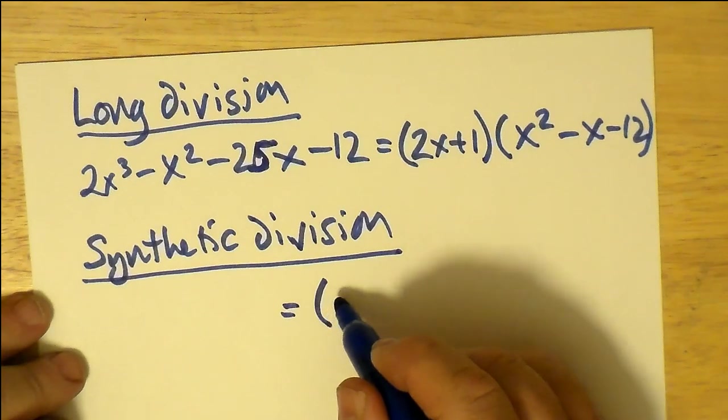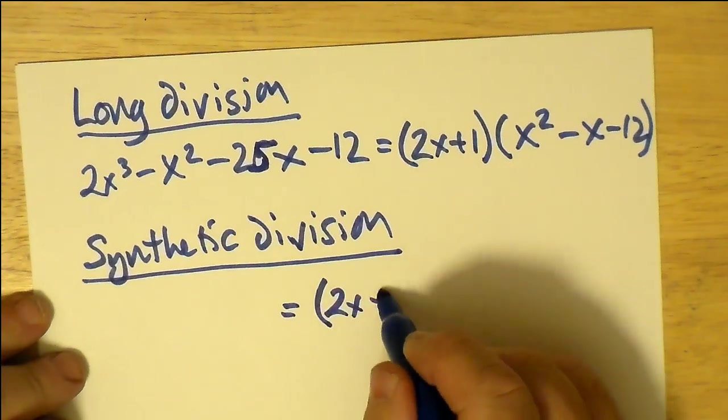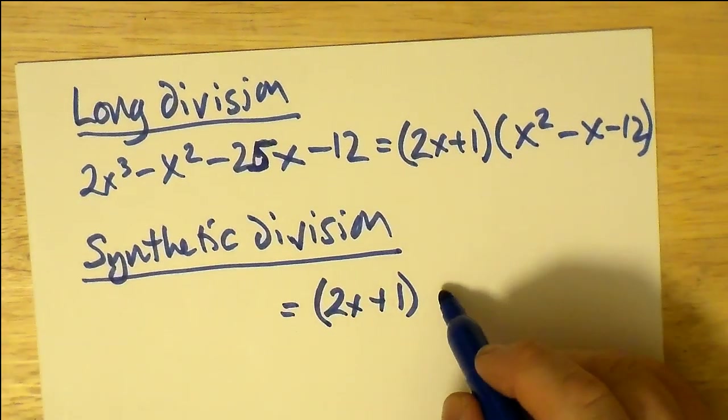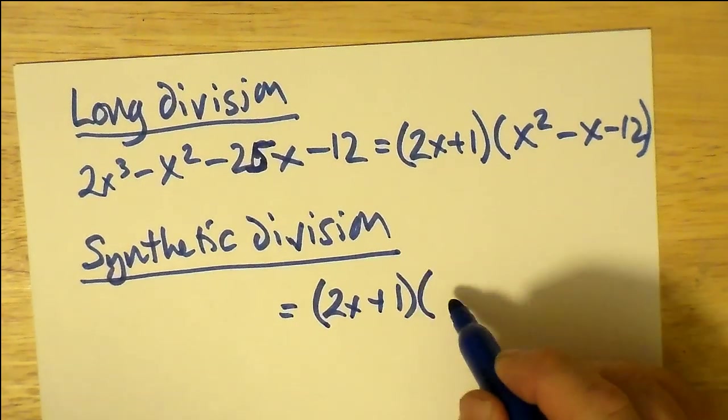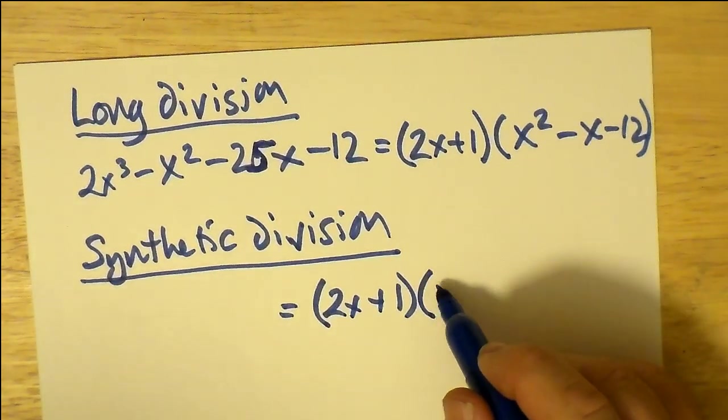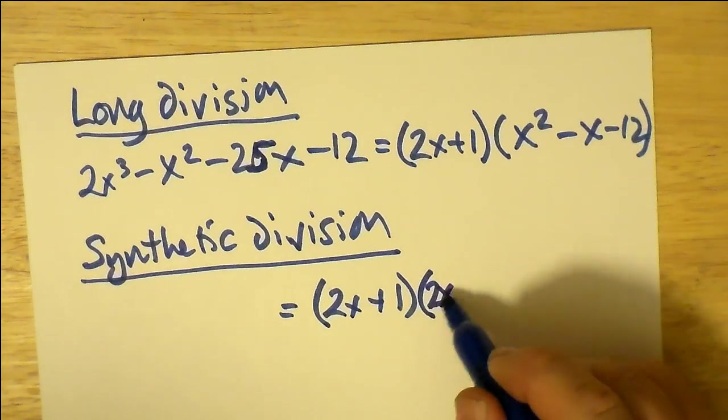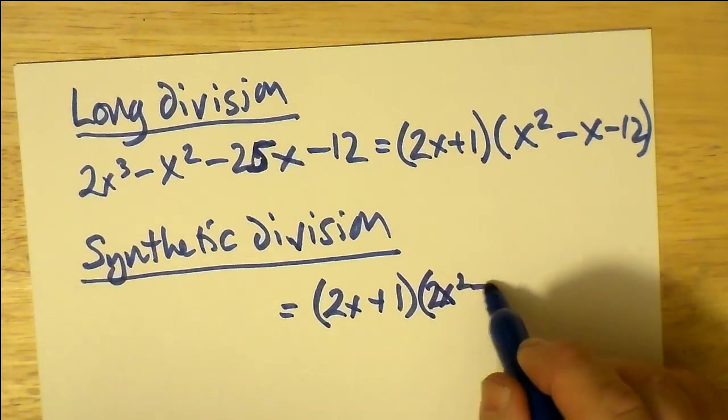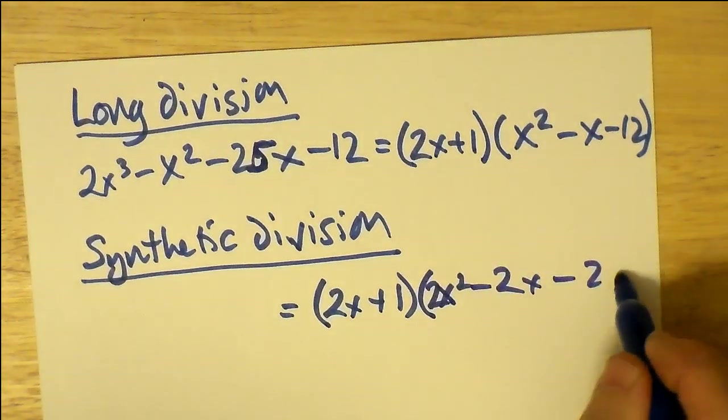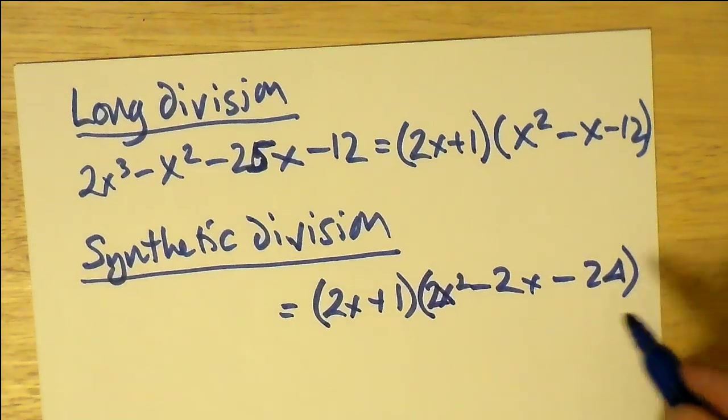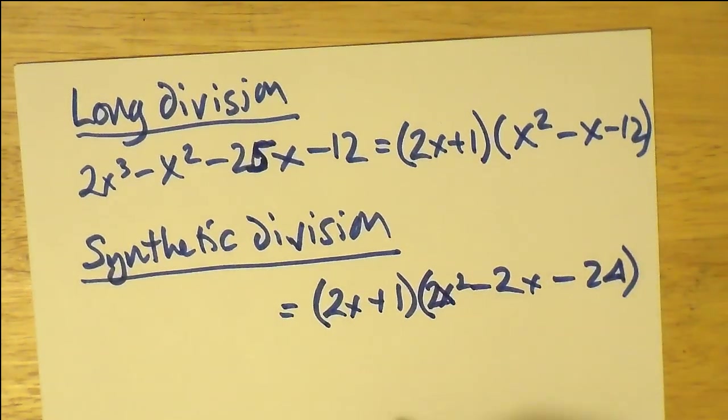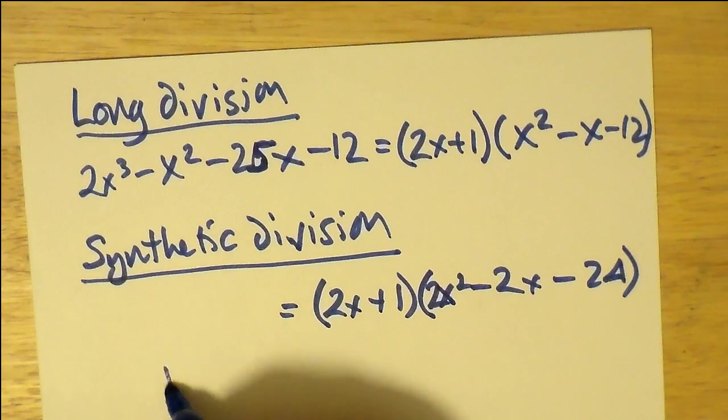Which we'll write naively as 2x + 1, just to show you that the other factor that we obtained from synthetic division makes no sense. Both of these answers cannot be correct, and it's the synthetic division answer that's wrong.